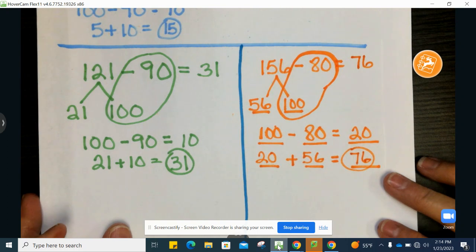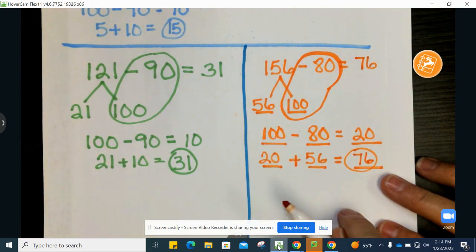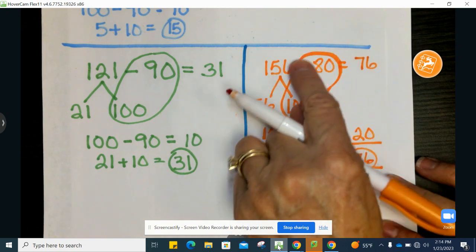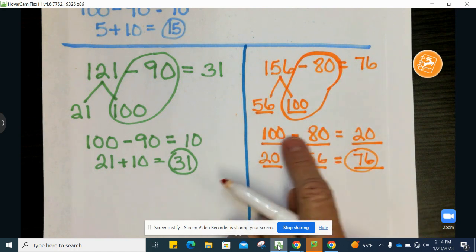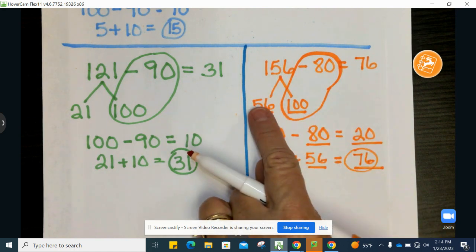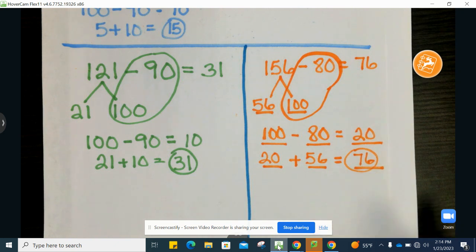It's the same process every time. Decompose, pull out 100, subtract, and then add this number back in with this part. And you have your final answer. I hope you found that helpful. Thank you for listening. Have a fabulous day.